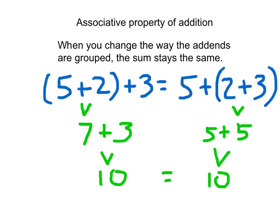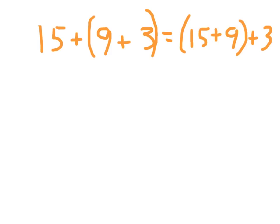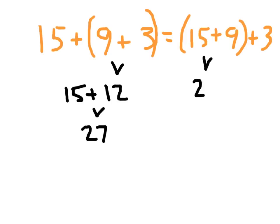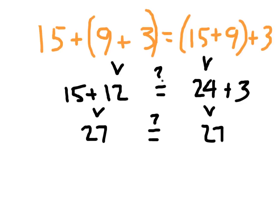See if you can come up with another example. Here's one: 15 plus 9 plus 3 equals 15 plus 9 plus 3, where on the left side 9 and 3 are grouped, and on the right side 15 and 9 are grouped. We have the same addends in the same order — just different groupings. 15 plus 12 is 27; and 15 plus 9 is 24, plus 3 is also 27. The sum stays the same — this is the associative property of addition.